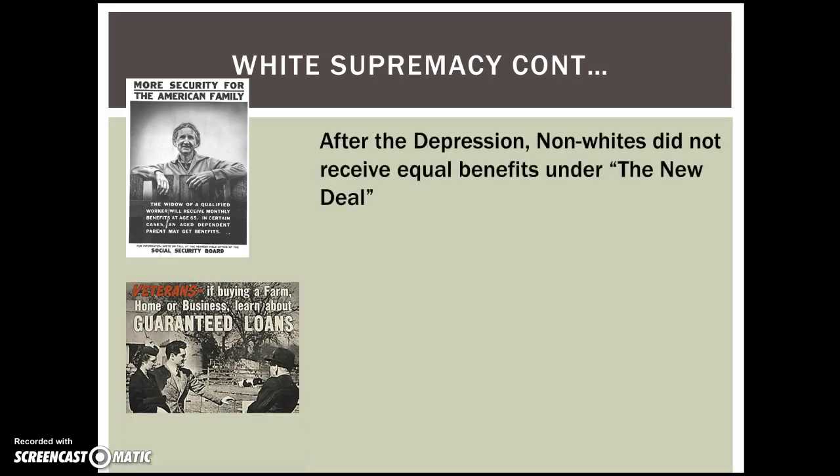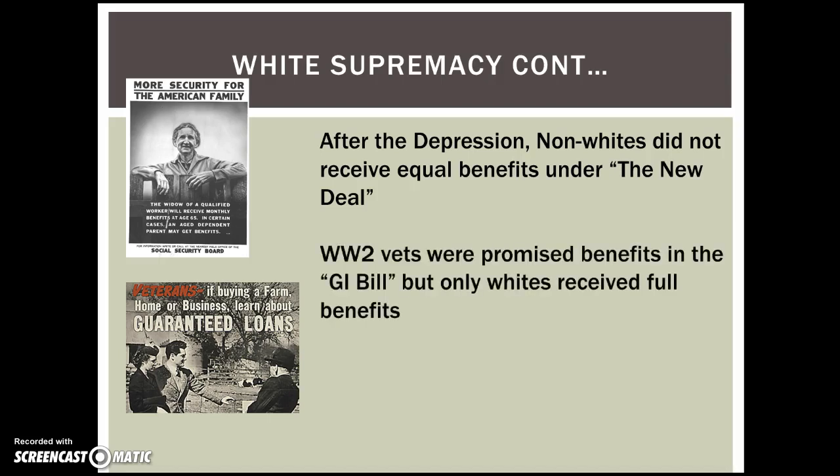Even outside of Jim Crow and outside of slavery, for the history of the U.S., opportunity has followed white Europeans. For the history of the U.S., opportunity has meant the exclusion of black, brown, and Asian folks. For example, after the Depression, the New Deal provided benefits like Social Security, unemployment benefits, and disability to the U.S. population. However, this oftentimes meant excluding non-whites — whites receiving benefits and non-whites not having access to them.